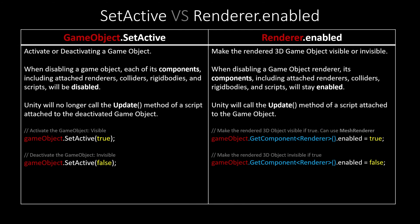To deactivate a game object using setActive, we'll use this code — setActive and pass false. And to make a game object invisible using renderer.enabled, we'll use this form.